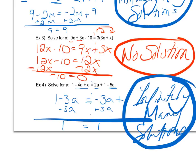If instead I get something funky, like -10 = 0, that never makes sense, there's no solution. Or if I get something that always is true, like 1 = 1, or 9 = 9, that's going to be infinitely many solutions.